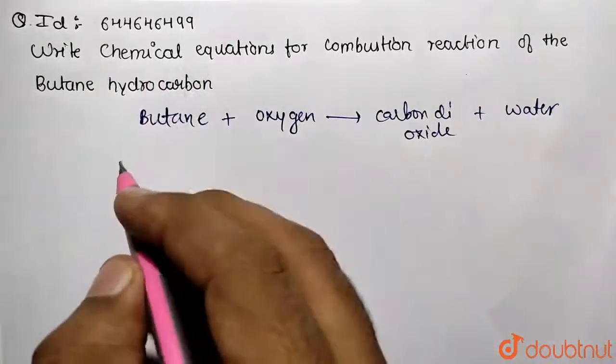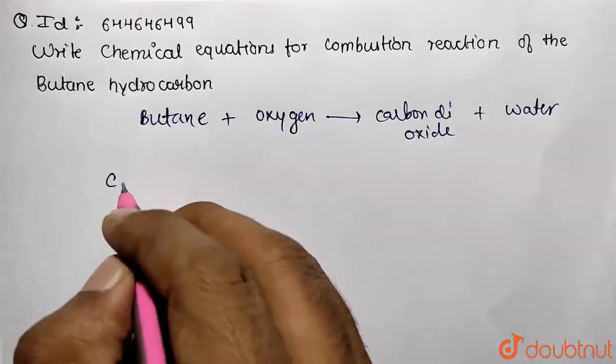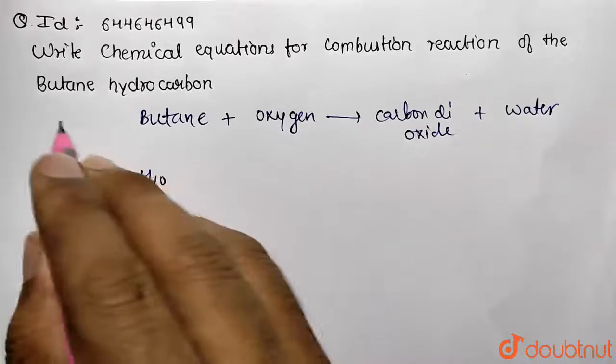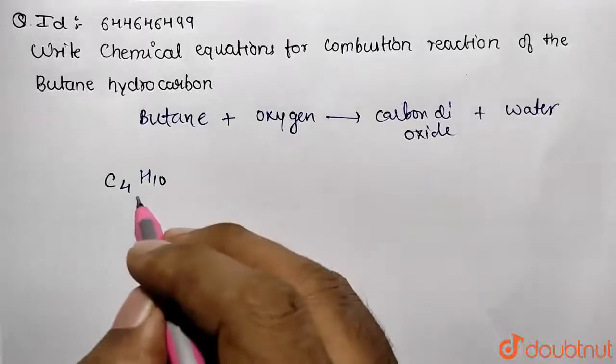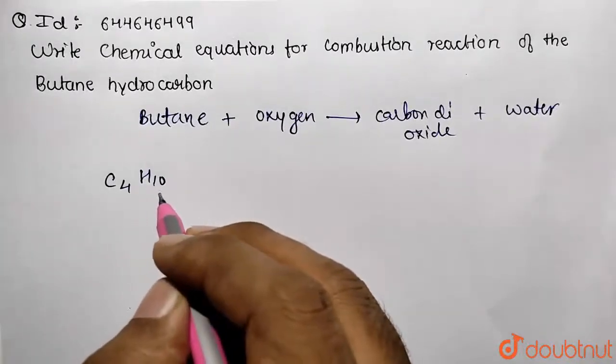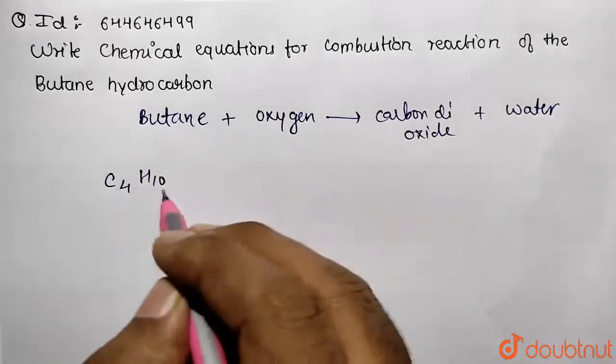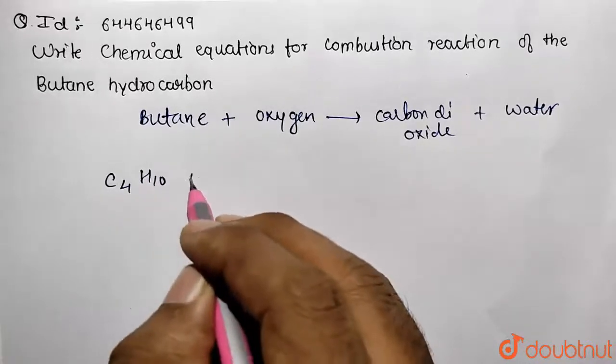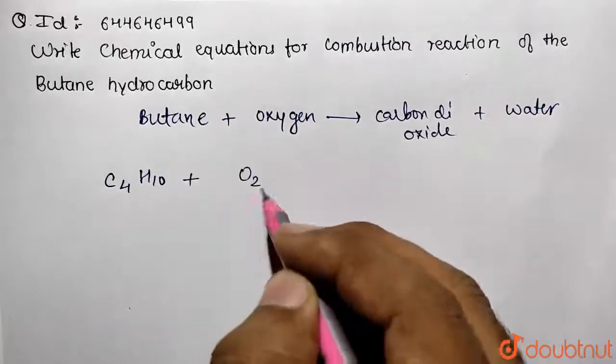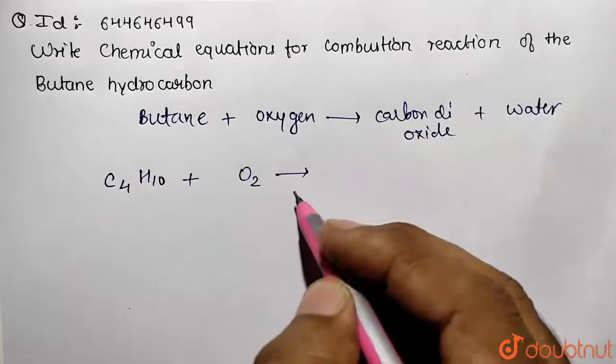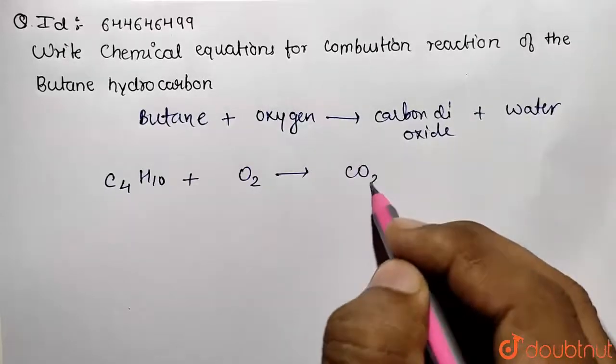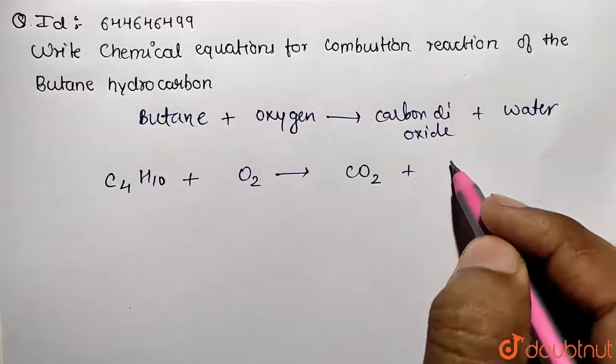Let me take the formula because we need to write the chemical equation. Butane is represented by C4H10 because 'but' root word means four carbon, and this is an alkane, so CnH2n+2 formula will be followed. That's how I have written C4H10 over here. Now oxygen is being reacted with this one, so what set of products will we get? This is going to be CO2, and additionally five moles of water molecules will be given.